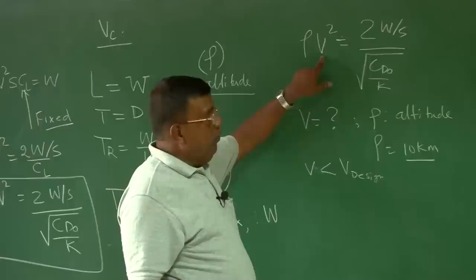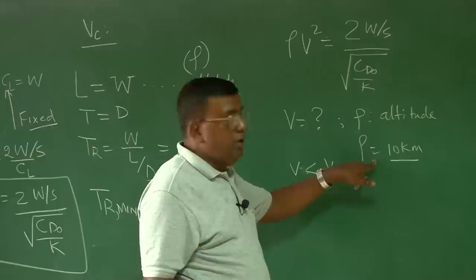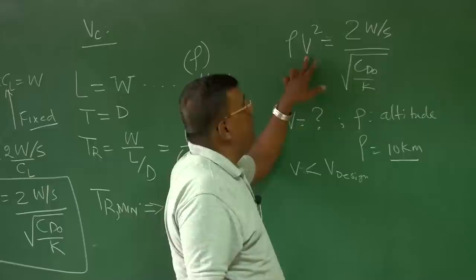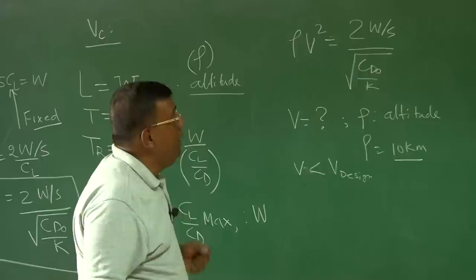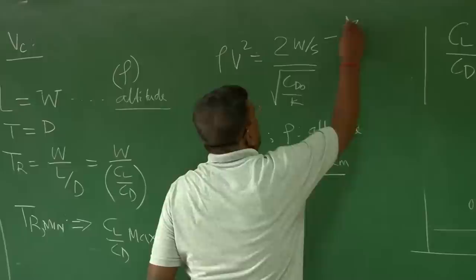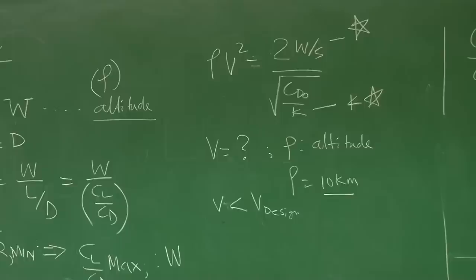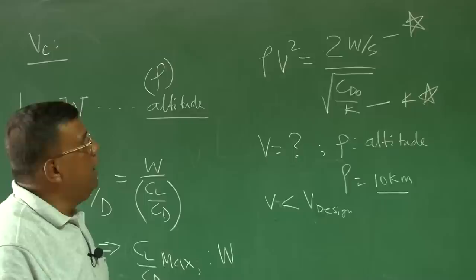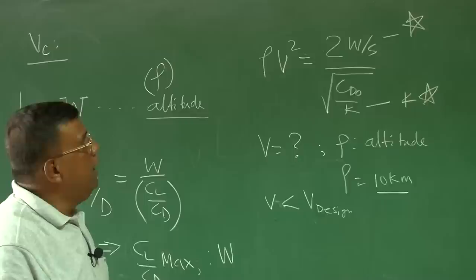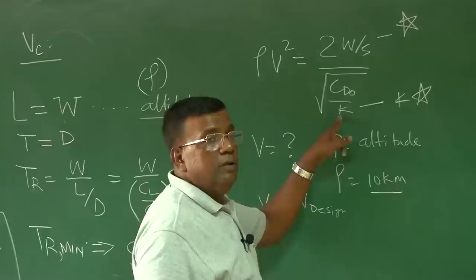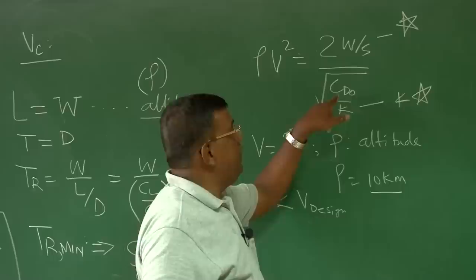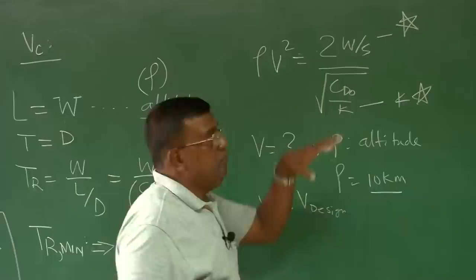For example, if you want to fly at 10 km and find that for the given wing loading and CD_naught, V is coming out less than your design V of 150 m/s, you have to retweak W/S or manipulate CD_naught. Changing K — the aspect ratio — means S may also change, and CD_naught may change too. Everything is interlinked. Design is not just computation; you need a synthesis philosophy because every parameter affects the others.